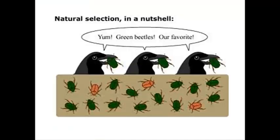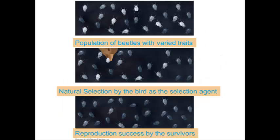Natural selection is an editing mechanism. It results from the exposure of heritable variations to environmental factors that favor some individuals over others. So let's take this population of bugs — they do have varied traits in terms of color. Some are gray, some are black, and some are white.